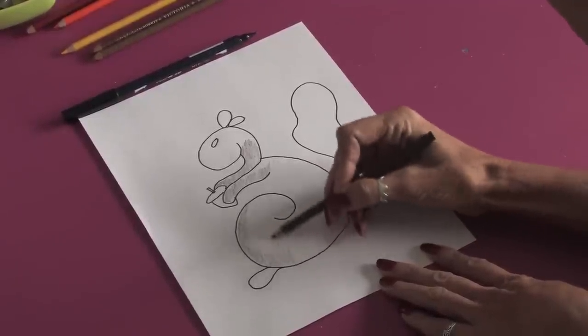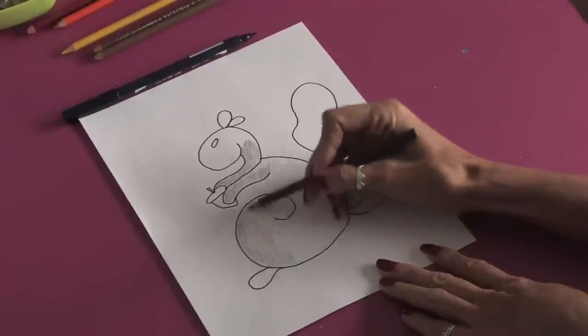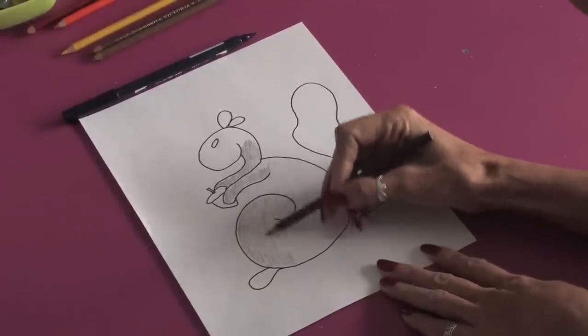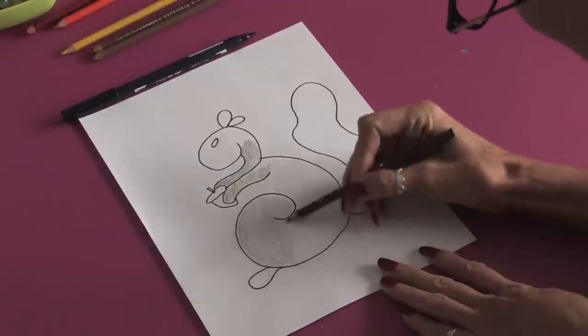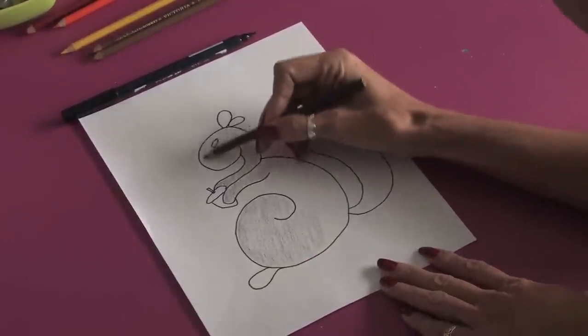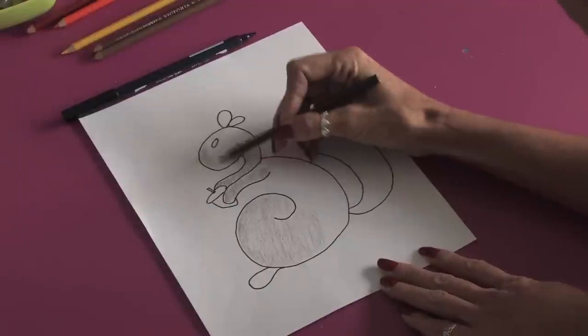Just like this, nice long smooth strokes. You see how quickly this can be filled in? I'm using a dark brown colored pencil to do the base of the body, and you can continue just like this.